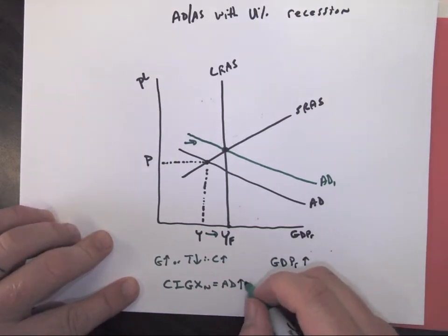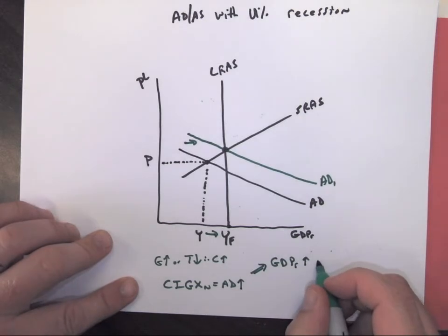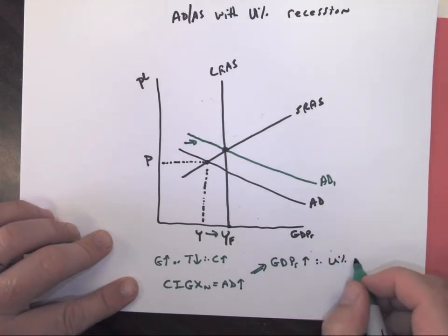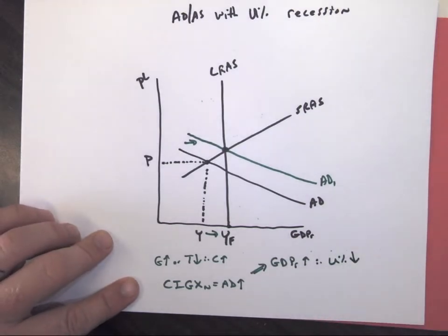Aggregate demand went up. That leads to GDP going up. And therefore, unemployment is going to decrease. And that's what we want. That's our goal.